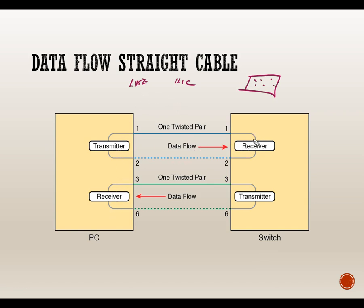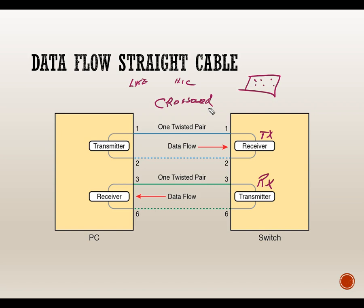If you connect PC to PC, transmitter to transmitter and receiver to receiver, you won't have data transfer. For like-to-like connections we use a crossover cable, crossing pairs one and three, and two and six. This sends transmitter to receiver, just like the switch does internally. Like-to-like means NIC to NIC, computer to computer, computer to router Ethernet port — all require a crossover cable.